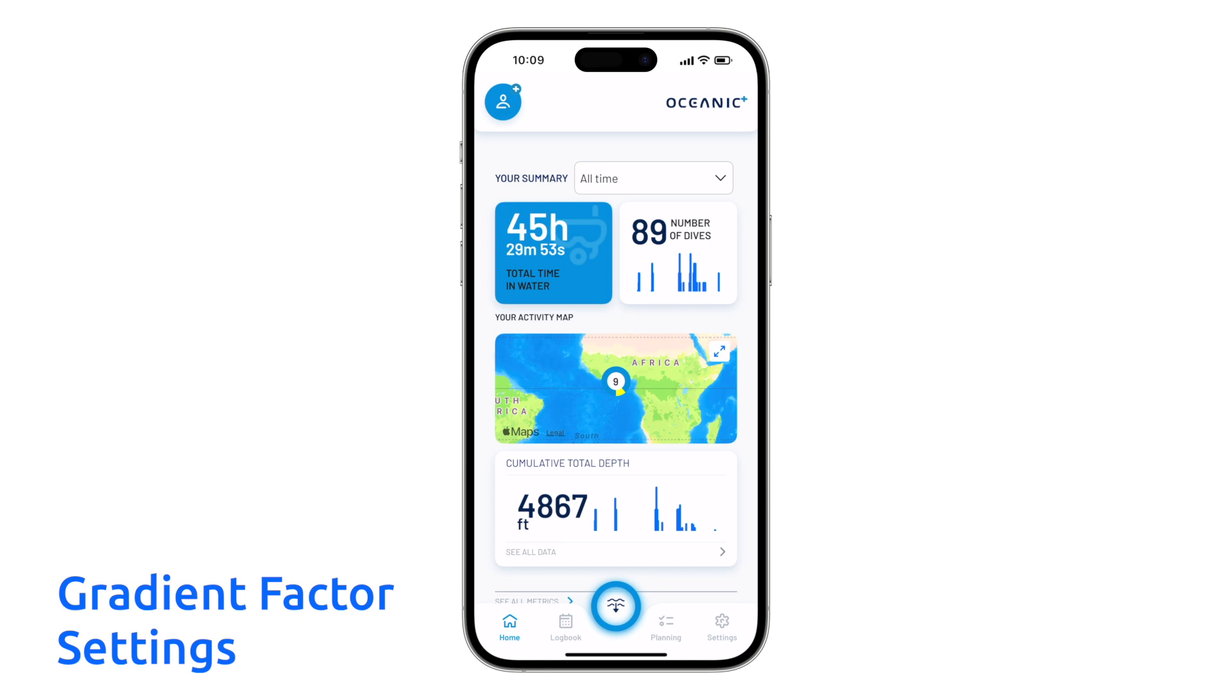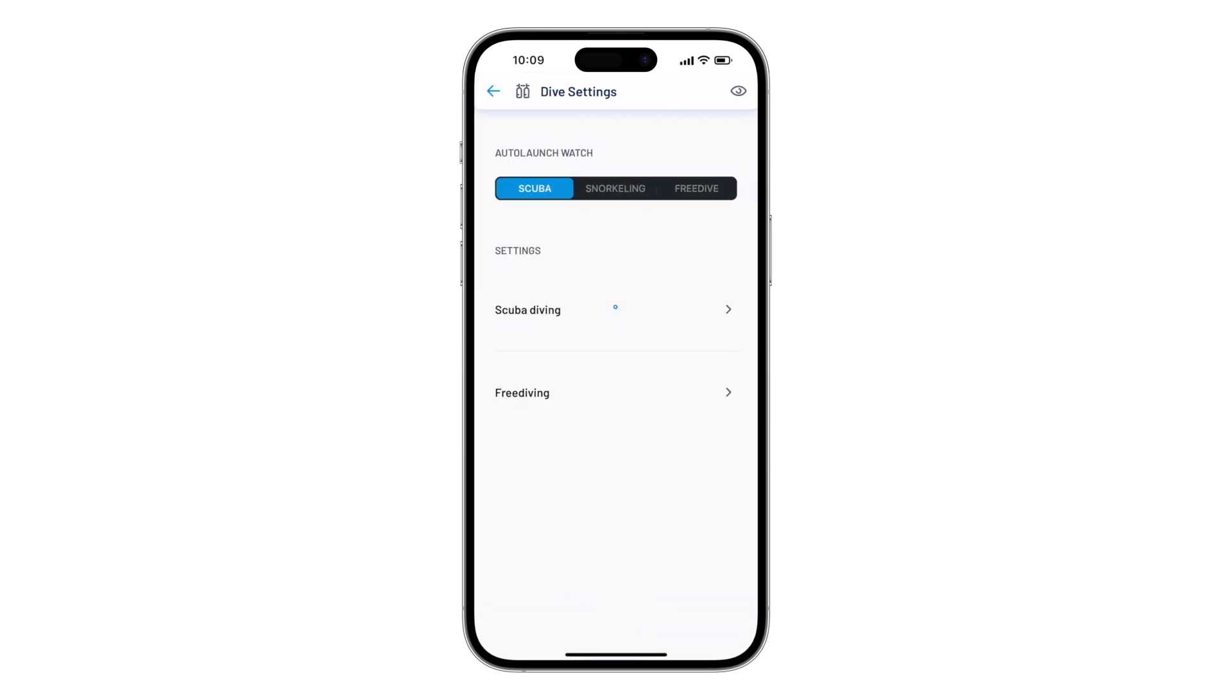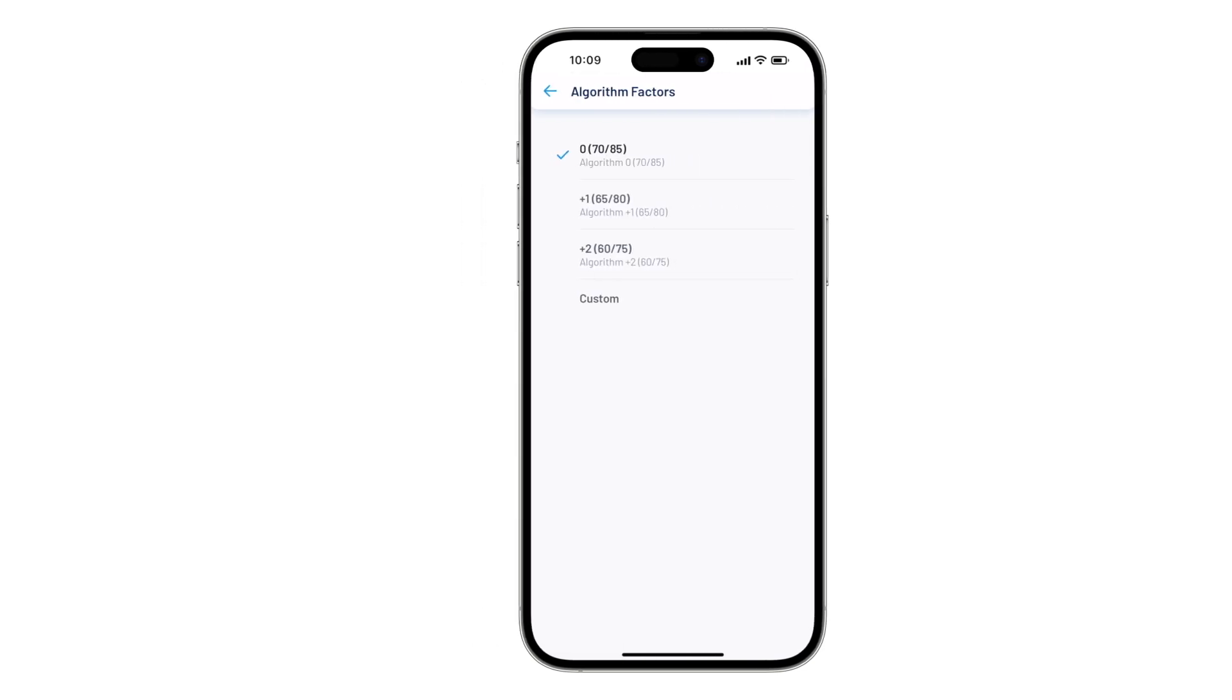Oceanic Plus provides the flexibility to choose a variety of preset gradient factors to allow either a more liberal or conservative approach to optimize your dive plan depending on personal preference. And as a reminder, you can change these settings on both the Apple Watch Ultra and the iPhone version of Oceanic Plus. In the Dive Settings menu, select Scuba Diving, then select Conservatism, then select Algorithm Factors.